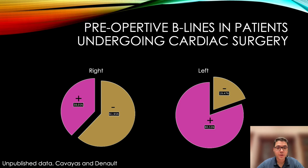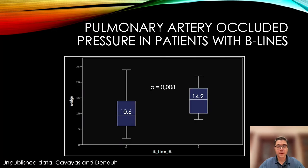As there is often a gravitational gradient in the edema distribution, this could potentially render TEE oversensitive. Further clouding the issue, atelectasis — a common occurrence in the dependent lung zones of patients under general anesthesia — has also been associated with the presence of B-lines. In our cohort of 115 patients undergoing cardiac surgery, we could find left-sided B-lines in 80% of patients. However, right-sided B-lines were less common, found in only 38% of patients. Patients with right-sided B-lines had slightly more elevated pulmonary artery occlusion pressures than patients without right-sided B-lines.